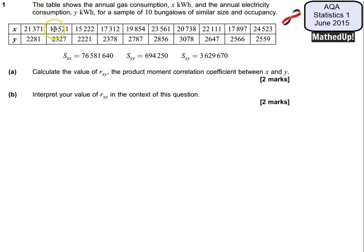I should say that we've been given the raw data and we've also been given the summarized data over here as well. Part A says calculate the value of rxy, the product moment correlation coefficient between x and y. And then in part B we're going to interpret this in the context of the question.